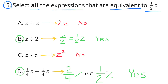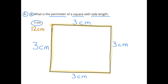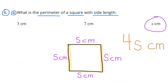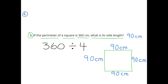Number 6A: What is the perimeter of a square with side length 3 centimeters? All sides of a square are equal, so 3 centimeters times 4 sides equals 12 centimeters. For 7 centimeters: 7 times 4 equals 28 centimeters. For side length S centimeters: S times 4, or 4S centimeters. Part B: If the perimeter of a square is 360 centimeters, what is its side length? 360 divided by 4 equals 90 centimeters.